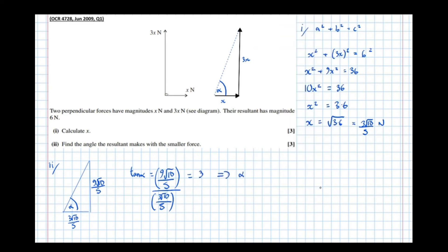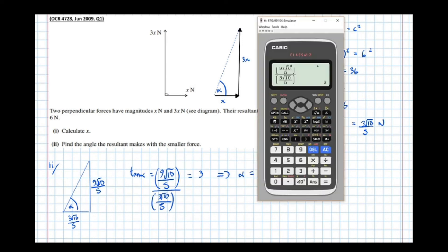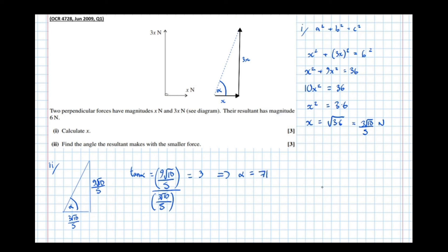Which implies alpha, the angle made, equals the arc tan of that. So inverse tan of that. Which is 71.6 degrees. And that's all the requirements of the question fulfilled.